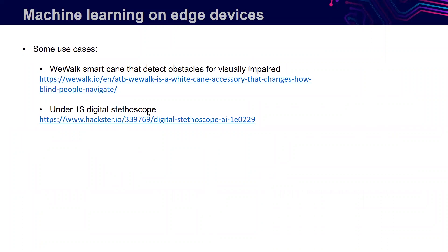Some encouraging use cases: one is the WeWalk smart cane from a Turkish startup. The idea is a cane for visually impaired people that includes sensors to sense the environment around the cane and provide useful information. This type of use case will be much more upgraded as new hardware arrives, and it has been mentioned that very soon it will support 360-degree video analytics processing and could provide a lot of value.